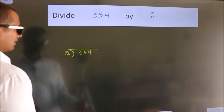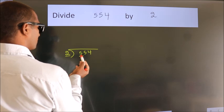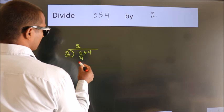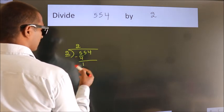Next, here we have 5, here 2. A number close to 5 in 2 table is 2 2's 4. Now we should subtract. We get 1.